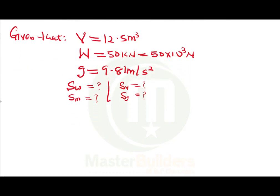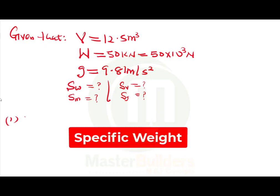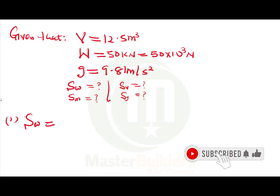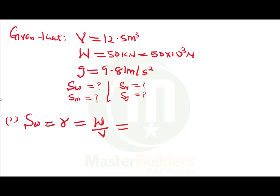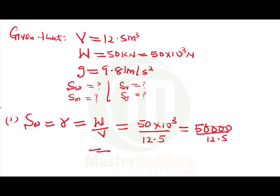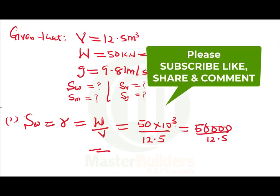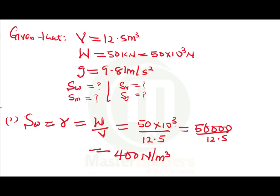Number one: specific weight. Specific weight γ is defined as weight over volume. So γ = W/V = (50 × 10³ N) / 12.5 m³ = 50,000 / 12.5 = 4,000 N/m³. Wait — that gives us 4,000 N/m³. So the specific weight is 4,000 newtons per meter cube.